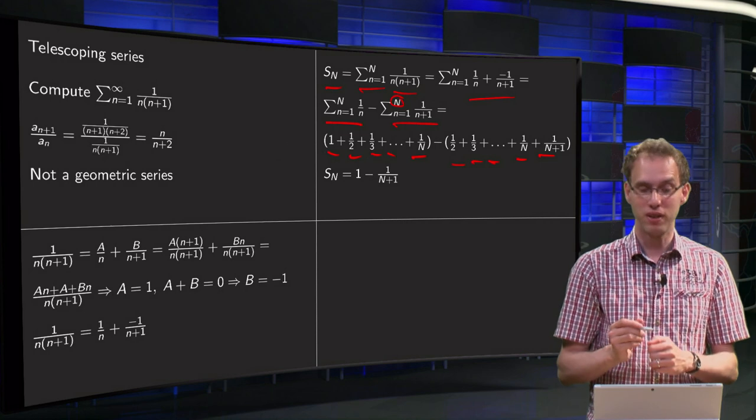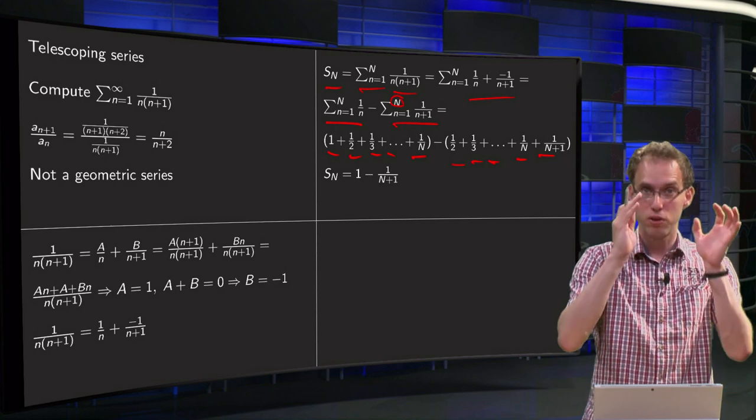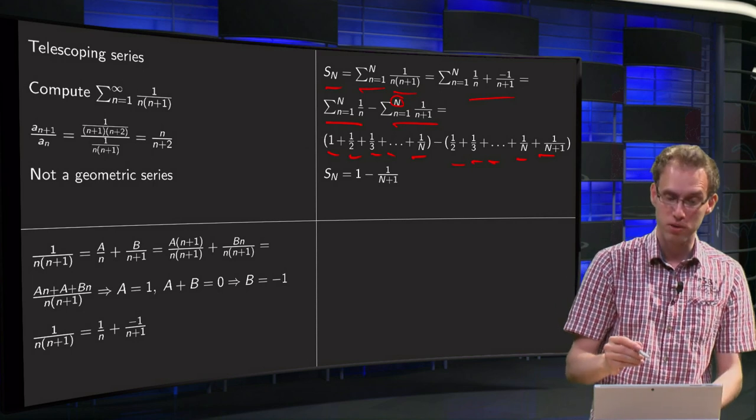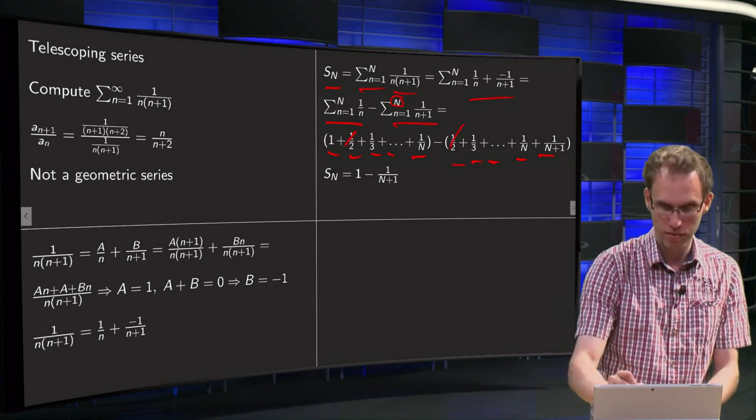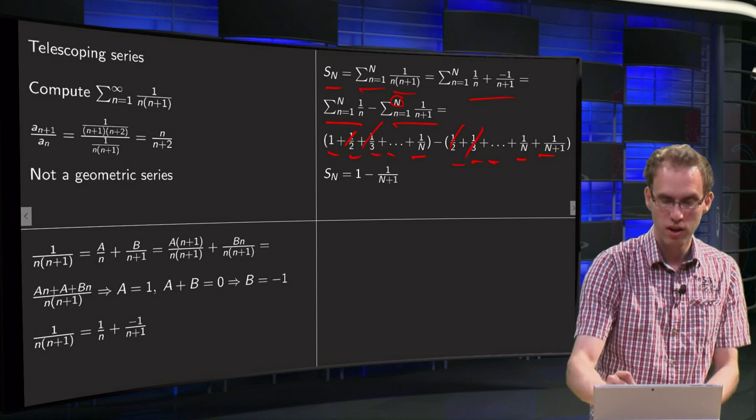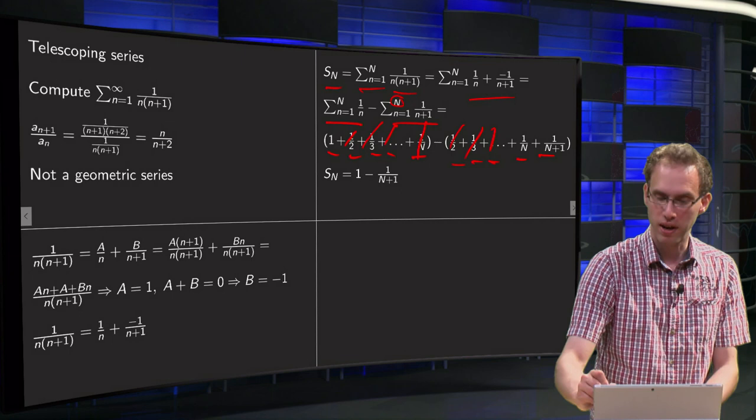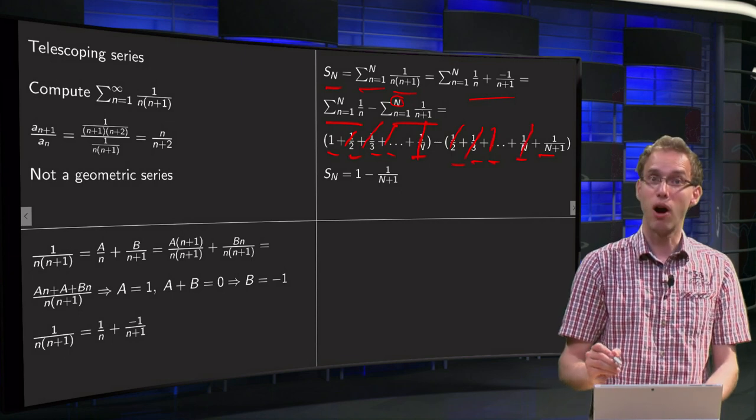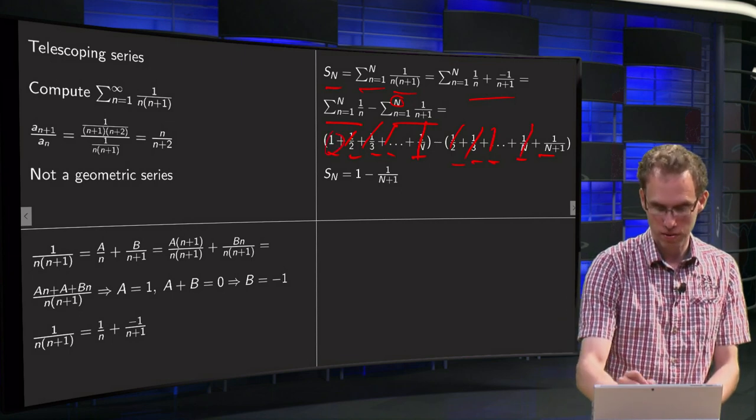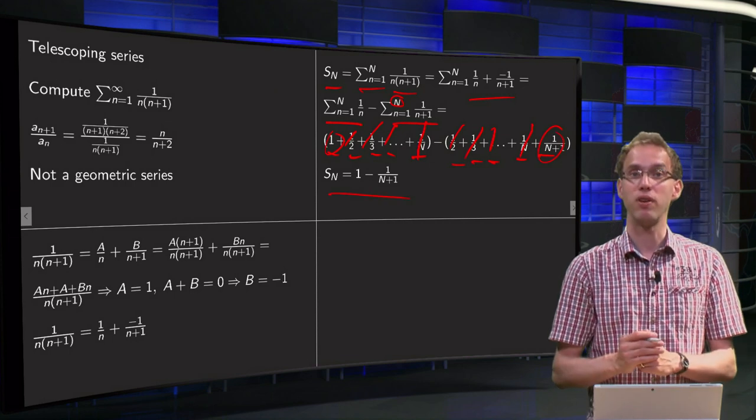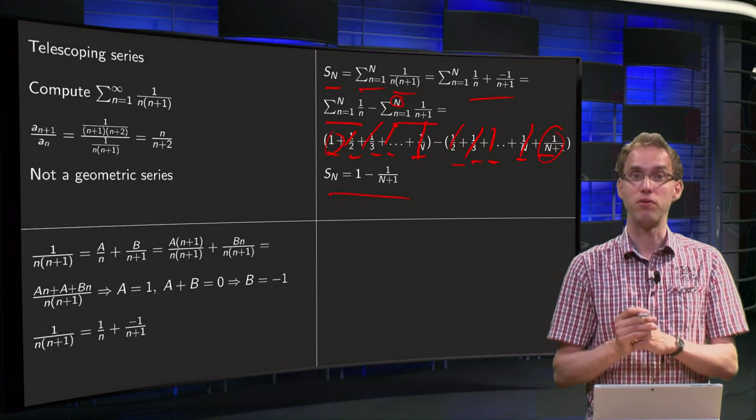And now we see something funny happen, because we have sum minus sum, but there are lots of terms they have in common. So we have a 1 half minus a 1 half, a 1 third minus 1 third, 1 over 4 minus 1 over 4, up to a 1 over n minus a 1 over n. So the only terms we are left with is this 1 over here and a 1 over capital N plus 1 over here. So S capital N equals 1 minus 1 over capital N plus 1.